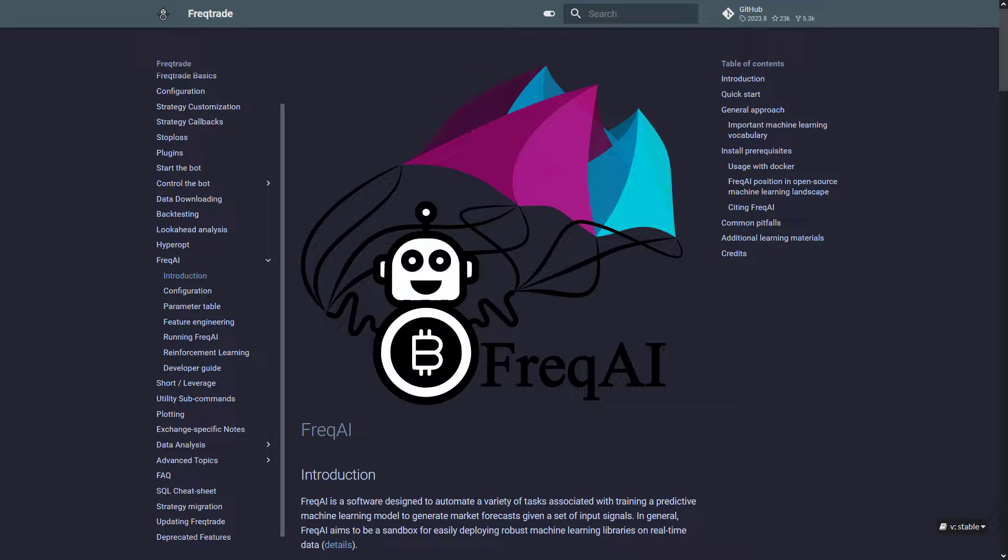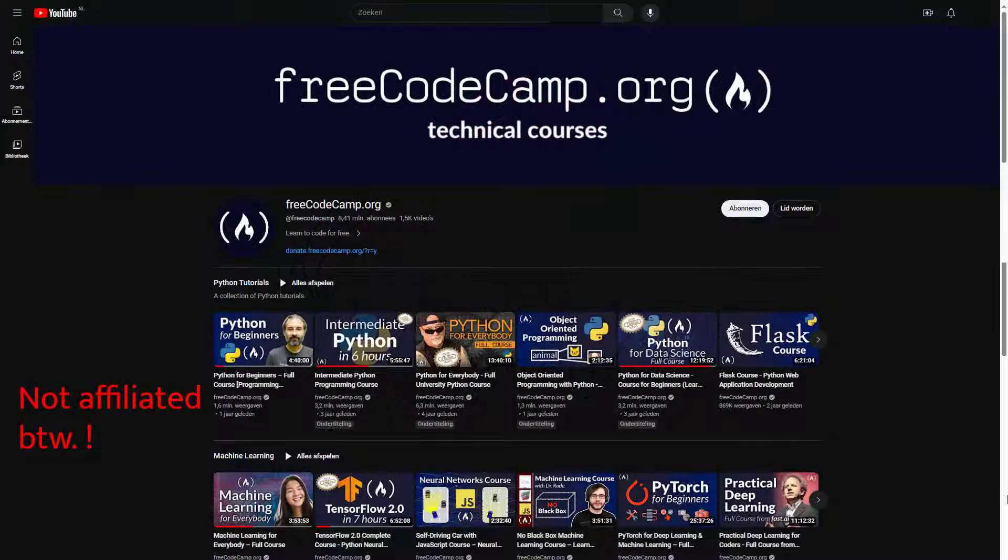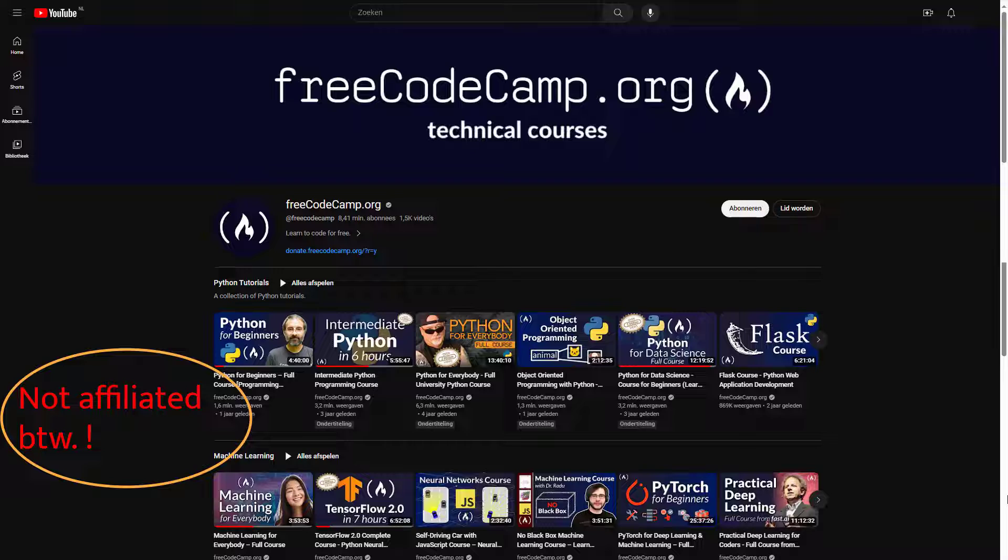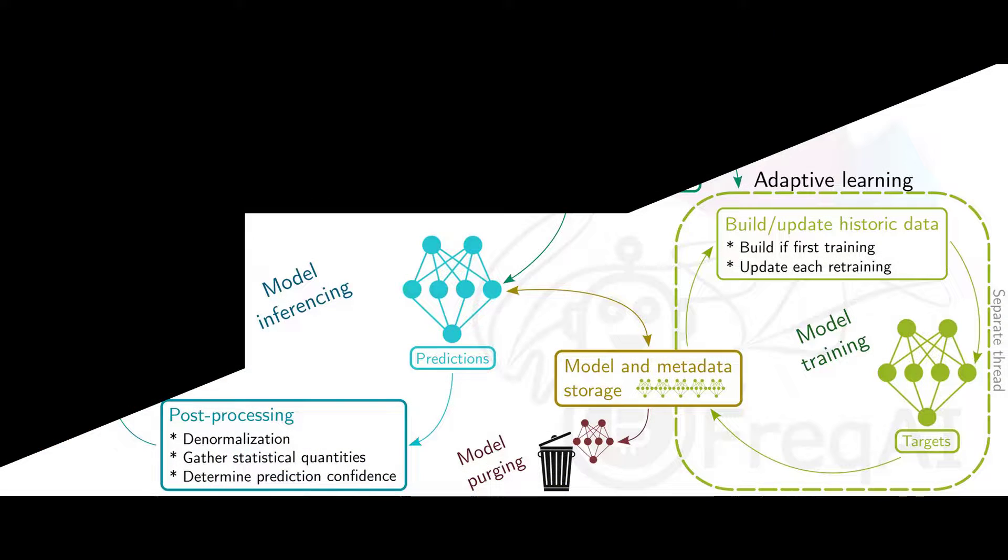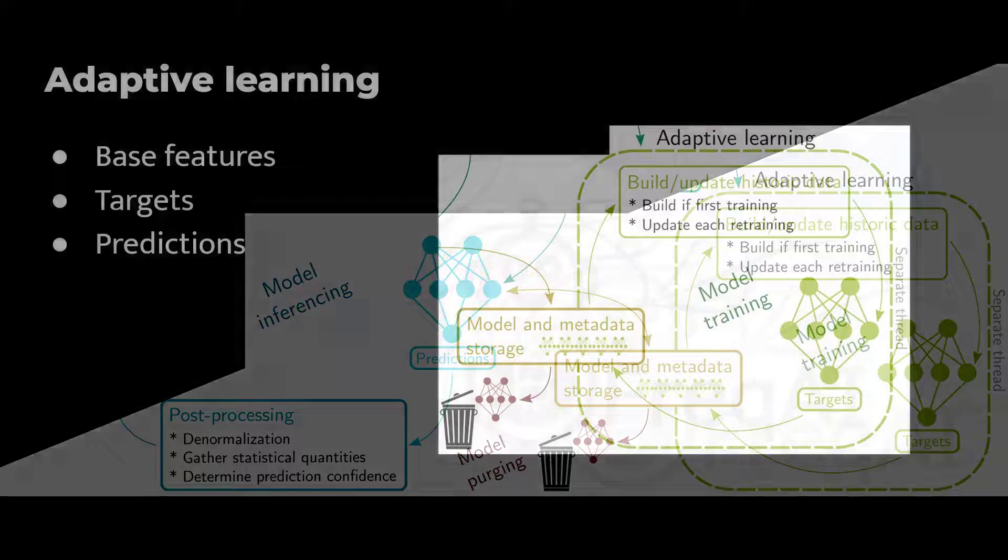Because the website of FreqTrade and Frag AI is loaded with useful, albeit advanced, information about the AI features this bot has. And there are also loads of websites and YouTube videos to find about these fields of knowledge. For example this free CodeCamp YouTube channel with loads of videos about these subjects. But let's proceed with the next step in the Frag AI data processing pipeline, which is the adaptive learning step.